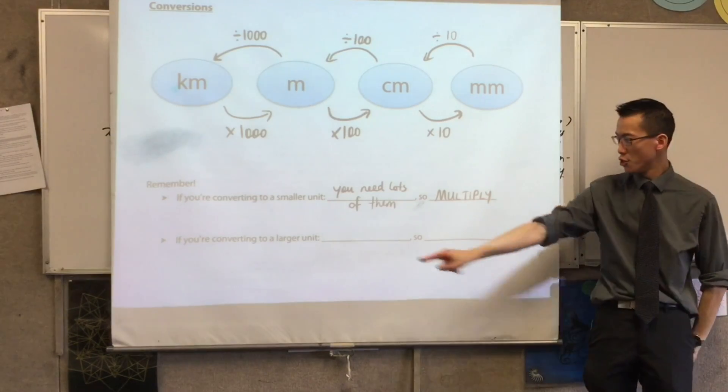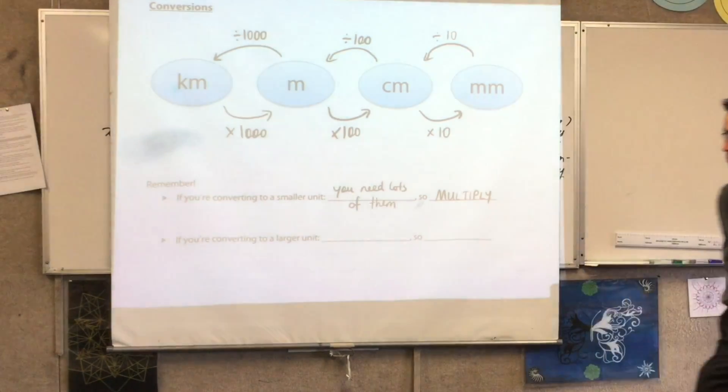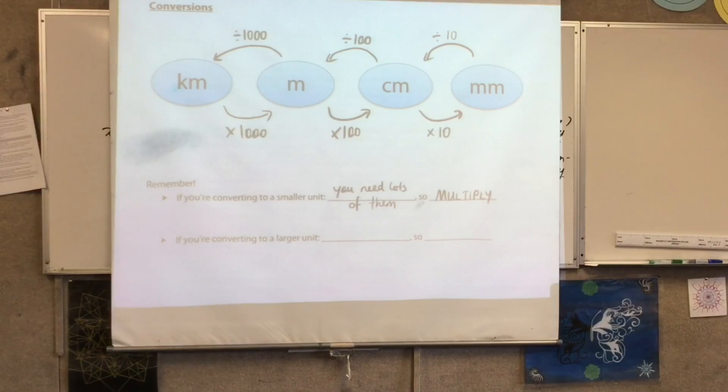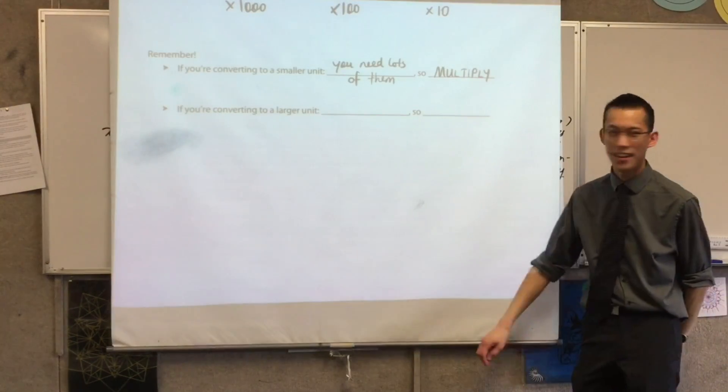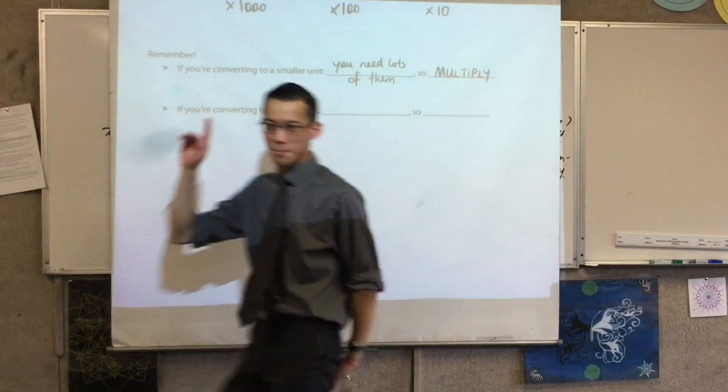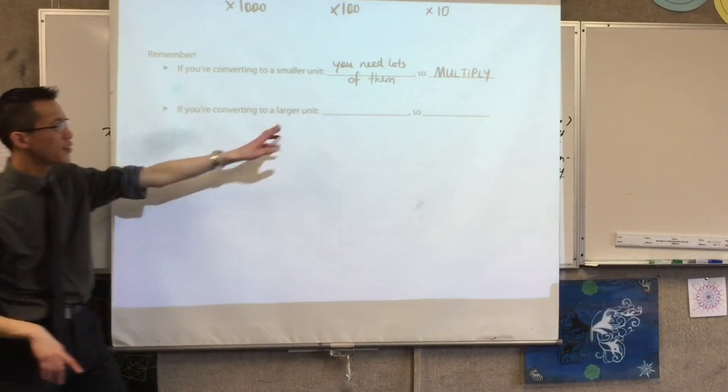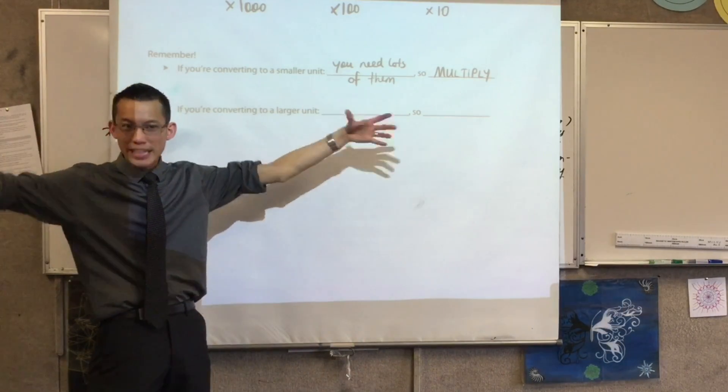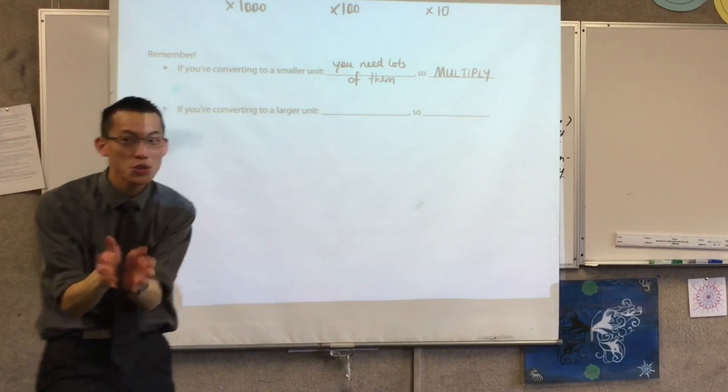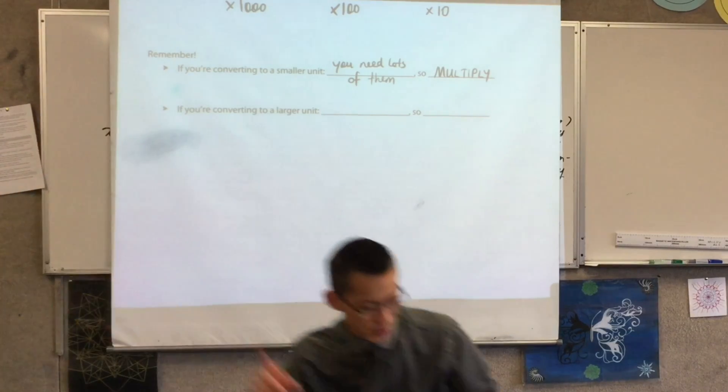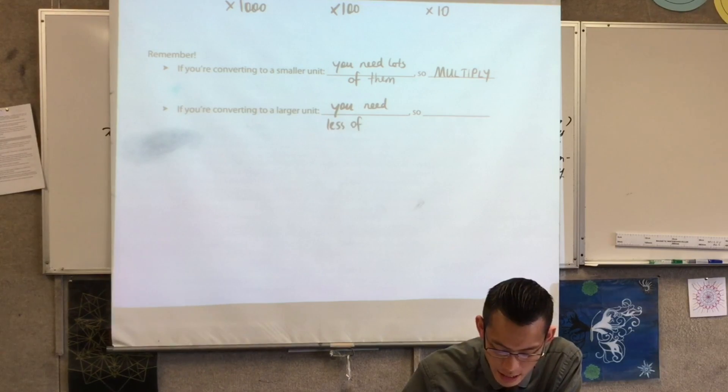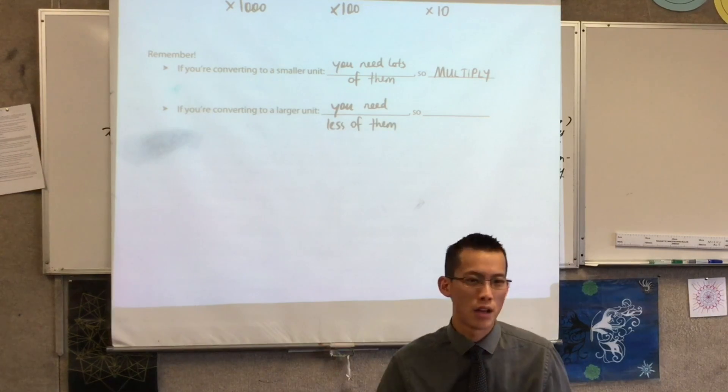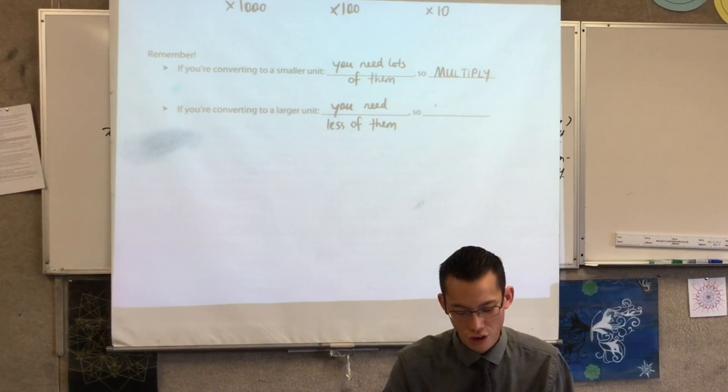Now, Will, you reckon you've got an answer for this next one? Yes. Give us a shot. You need lots of them. So if you're converted to a larger unit, you need less of them. Yes. Very good. Meters are really, really big, so you're not going to use many of them. Right? So I think Will's words are fine. You need less of them. So since they're getting smaller, you don't multiply. You divide. Good.